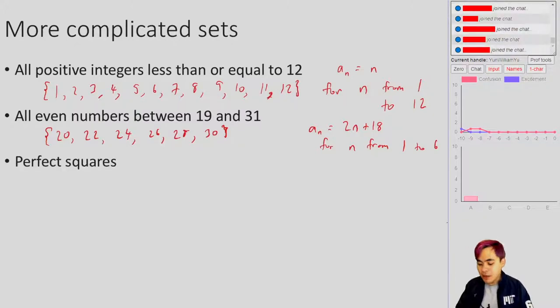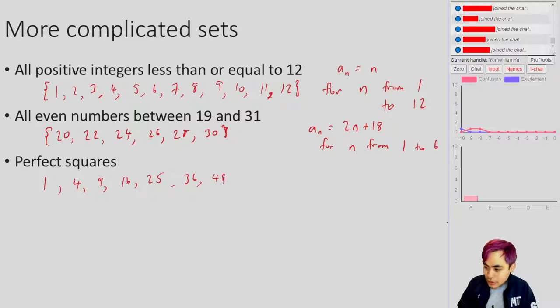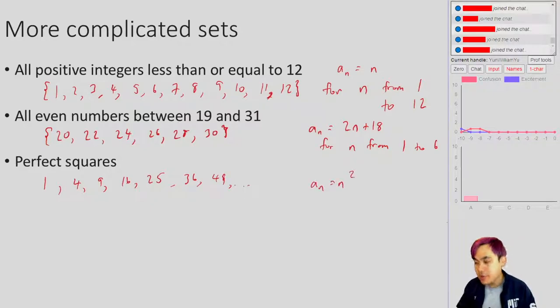Well, you have perfect squares - that's another infinite set: 1, 4, 9, 16, 25, 36, 49, and so on. There you get a_n is equal to n squared.